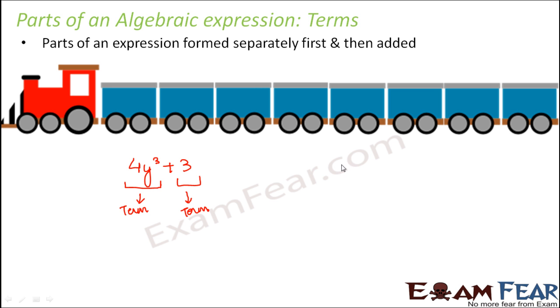Let's look at another example. Let's say a² plus b². So how many terms are there? Again, two terms. One term is a², the second term is b².